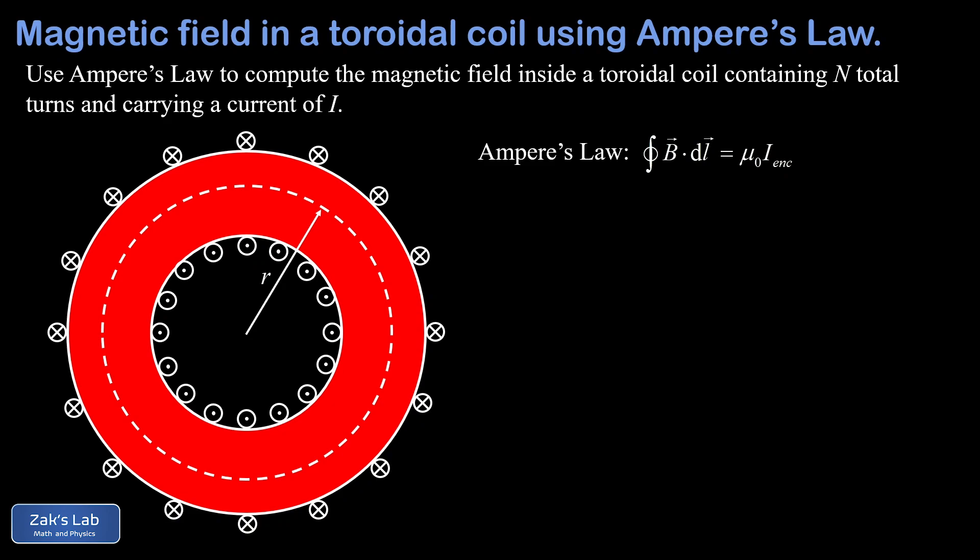The last thing we want to get done before applying Ampere's Law is that we want to know which way the magnetic field actually points inside this thing. We've already assumed that the field is circumferential, but we need to decide whether it's clockwise or counterclockwise through this toroid, and for that we need a right-hand rule.